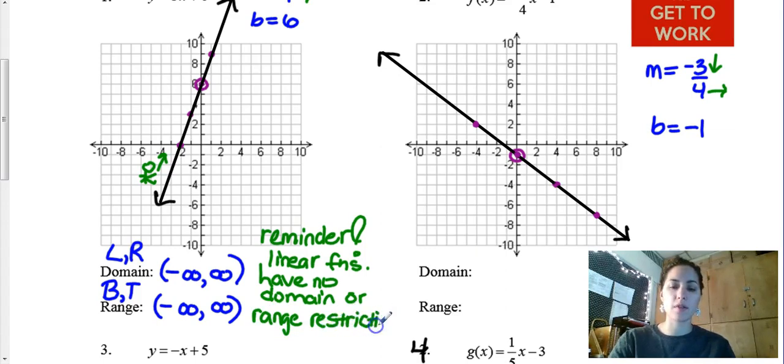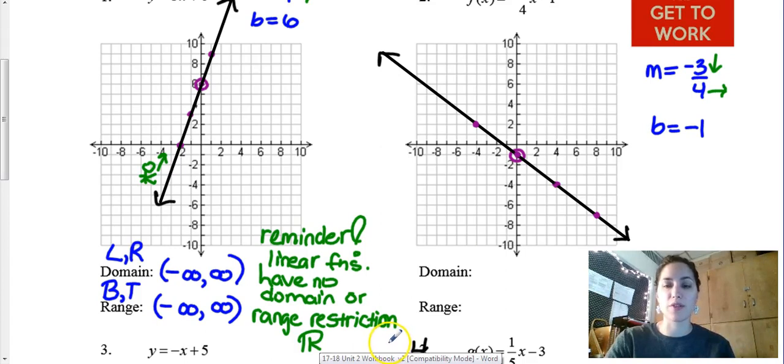We will always hit arrows top, bottom, left, right. So it's always going to be all real numbers. But we're going to practice because that way it really stays firm in our brain that there's no restriction here.